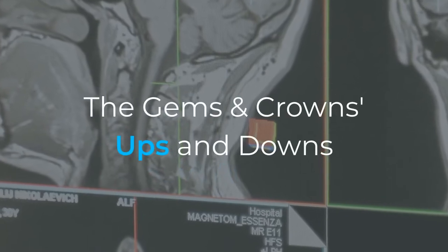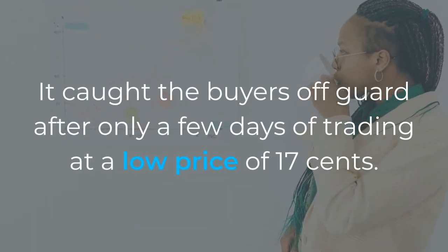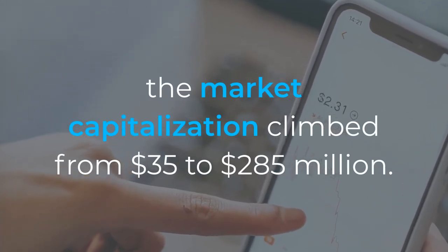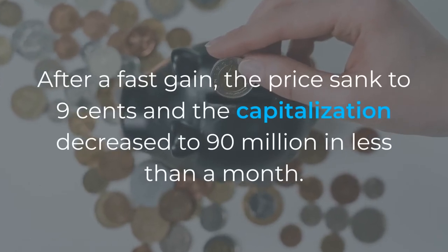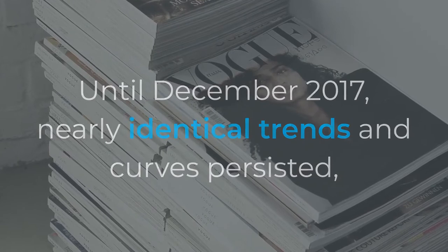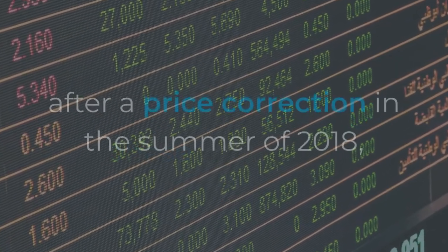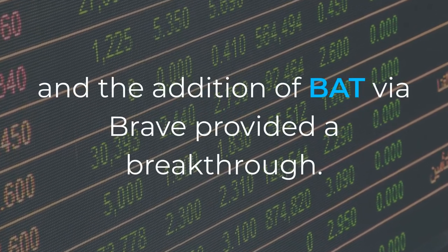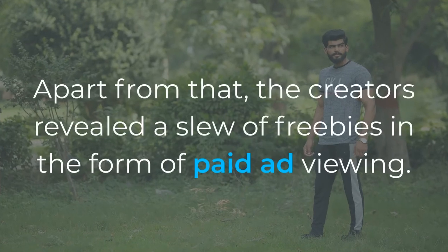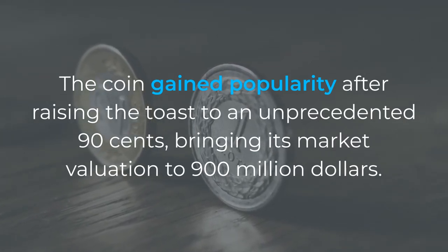Basic Attention Token — the ups and downs. The introduction of the ICO was extremely advantageous to the token. It caught buyers off guard after only a few days of trading at a low price of $0.17. The market capitalisation climbed from $35 to $285 million. After a fast gain, the price sank to $0.09 and the capitalisation decreased to $0.90 million in less than a month. Until December 2017, nearly identical trends persisted, and the basic attention token price soared to $0.70, with a market value approaching $700 million. After a price correction in the summer of 2018, the addition of BAT via Brave provided a breakthrough. The coin was listed on a prominent exchange at the start of 2019. The coin gained popularity after reaching an unprecedented $0.90, bringing its market valuation to $900 million.